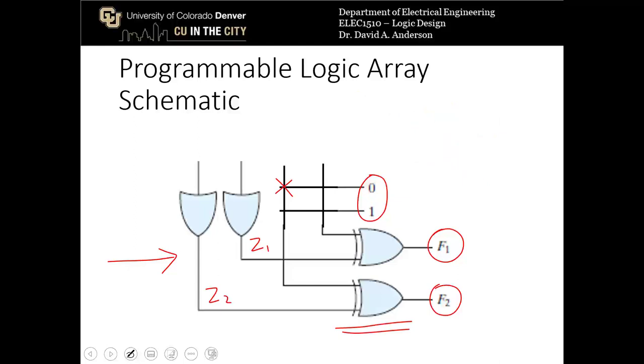However, now let's say that for f1 I create a connection between the 1 and the second input to the XOR gate. So now I've got f1 is equal to z1 exclusive OR 1, which means that it's going to be z1 1 prime OR z1 prime 1. Since 1 prime is 0, this term goes away and I just get z1 prime.